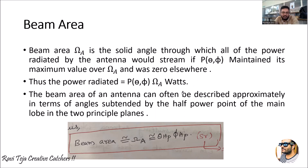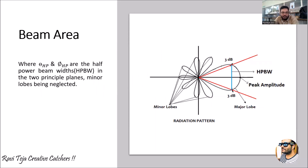Theta-HP and phi-HP represent the half power beam width. The remaining small lobes — called side lobes, minor lobes, or back lobes — can all be neglected. Beam area is essentially the radiation pattern showing how far the signal has been distributed. One major lobe is considered with respect to the half power beam width, where the power is expressed as P(theta-HP, phi-HP), taking both angle and phase into consideration for the beam area.